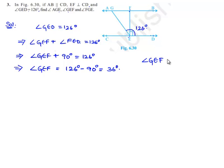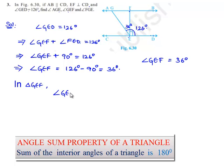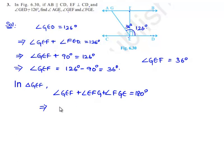We got one of the values asked: angle GEF is equal to 36 degrees. Now, if we consider triangle GEF, we know that the sum of angles in a triangle is equal to 180 degrees. So we can write: angle GEF plus angle EFG plus angle FGE equals 180 degrees. Angle GEF is 36 degrees, as found above.